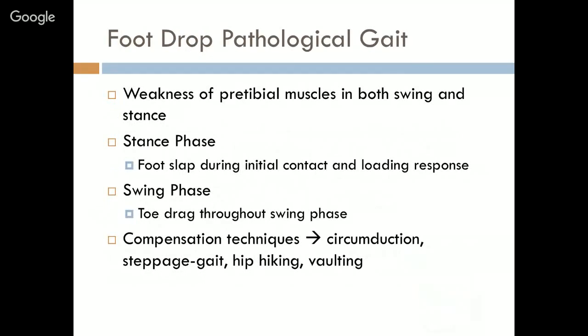As a pathological gait, foot drop involves weakness of the pre-tibial muscles, which are active in both swing and stance. In stance, a foot slap occurs during initial contact and loading response because the pre-tibial muscles are eccentrically active during those two periods. In a normal person, the ground reaction vector passes behind the ankle and knee center, causing plantar flexion; without this eccentric lengthening to control the action, foot slap occurs. In the swing phase, the concentrically active pre-tibial muscles help clear the floor, so toe drag occurs. Compensatory techniques include circumduction, steppage gait, hip hiking, and vaulting.